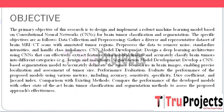A deep learning architecture using CNNs will be designed to effectively extract features from medical images and accurately classify brain tumors into different categories, distinguishing between benign and malignant cases. Additionally, a segmentation model will be developed to precisely delineate the tumor boundaries in brain images, enabling accurate localization and assessment of tumor size.